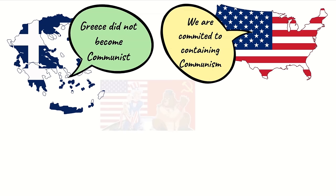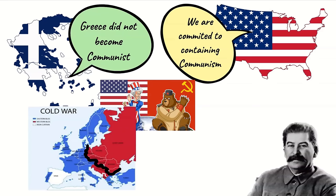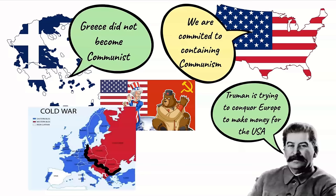However, it deepened the rivalry between the USA and the USSR and confirmed the split between communist and non-communist Europe. Stalin saw the Marshall Plan as a direct attack on the USSR. He accused Truman of using the plan for his own selfish reasons, to dominate Europe and to boost the US economy. He believed that the USA was using money to gain control over Europe, a policy which Stalin called dollar imperialism.